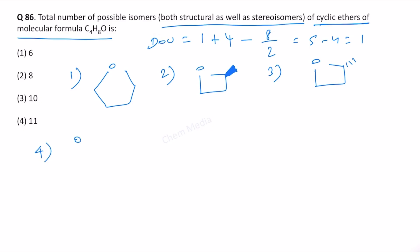And then number four, we can also write 3-methyl oxytane, but that doesn't have a chiral center because we have two CH2s. Therefore, it doesn't have a chiral center.